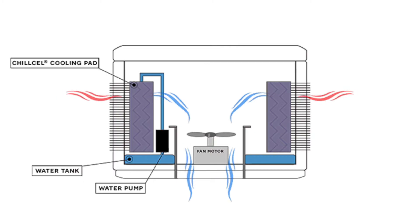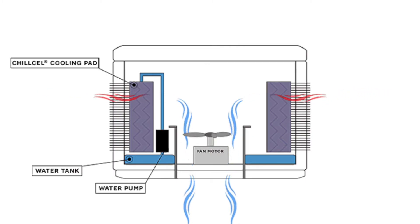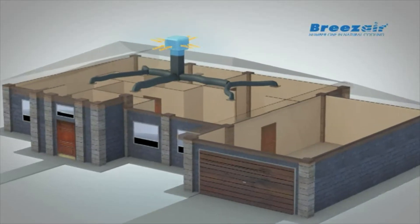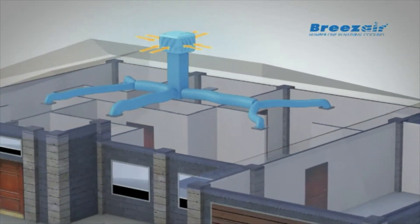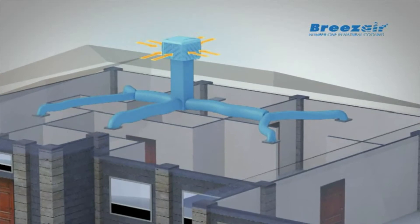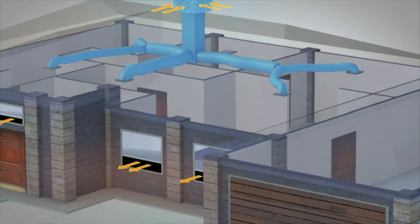Typically your evap cooler will sit up on your roof and it looks just like these two coolers behind me. The cooler draws the hot outside air over the wet pads causing evaporation of the water into the air. This results in a temperature reduction as the cool humidified air is then distributed through ductwork and into your home. The air then enters each room via ceiling outlets and at the same time pushes all the hot air out through your external doors and windows.